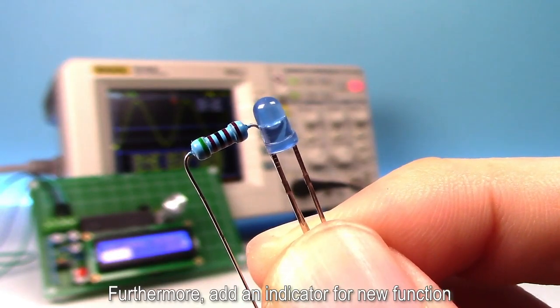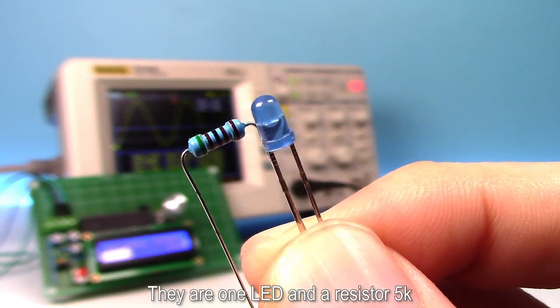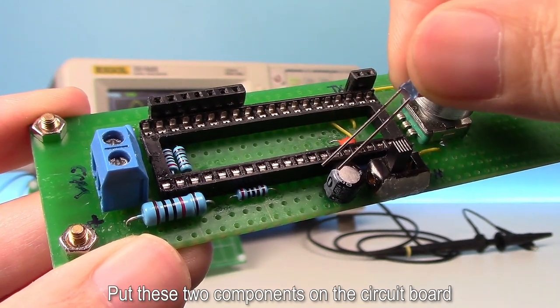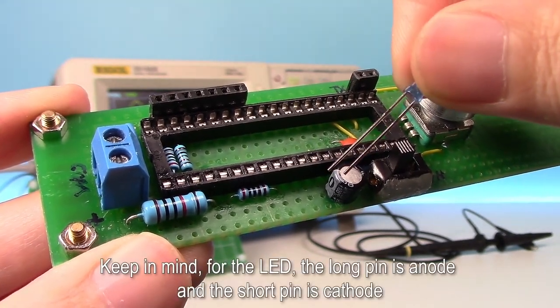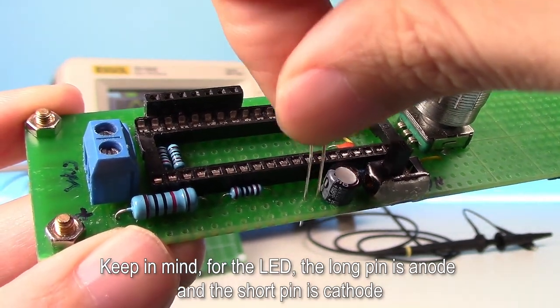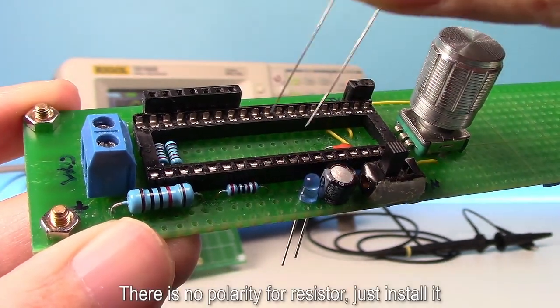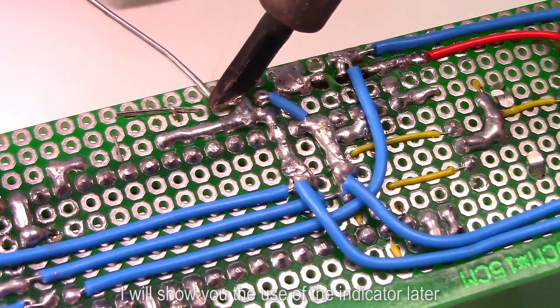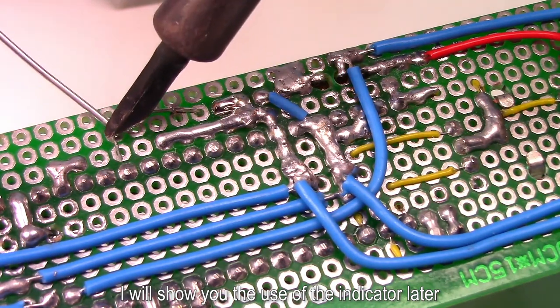Furthermore, add an indicator for new function. There are one LED and a resistor 5K. Put these two components on the circuit board. Keep in mind, for the LED, the long pin is anode and the short pin is cathode. There is no polarity for the resistor, just install it. Doing the welding, I will show you the use of the indicator later.